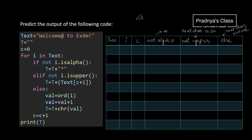Here is the dry run table. Let's start with the first pass. In the first pass the value of i will be W. Initially C is zero. We know that W is an alphabet, so it will not pass the first criteria. What's the next condition? It is not upper — but we know W is an uppercase letter, so this condition is also not satisfied.